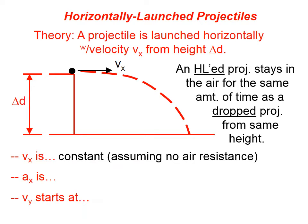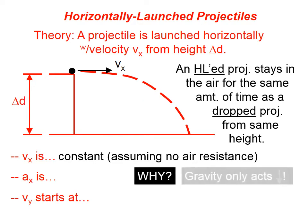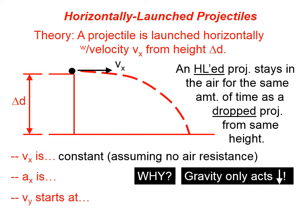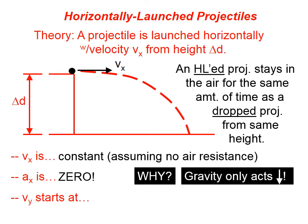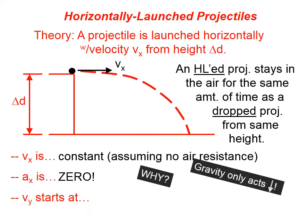V sub x, the x component of velocity, is constant, assuming no air resistance. Why would that be? Because gravity only acts downward, so gravity is not going to affect the x component. Gravity will affect the y component, but not the x component. A sub x, the acceleration in the x direction, is of course going to be zero. If the x velocity is constant, then the x acceleration is going to be zero. It's not going to speed up or slow down in the x direction because the only force acting on this object once it's in the air is gravity, and gravity only acts downward. So Ax is unaffected.